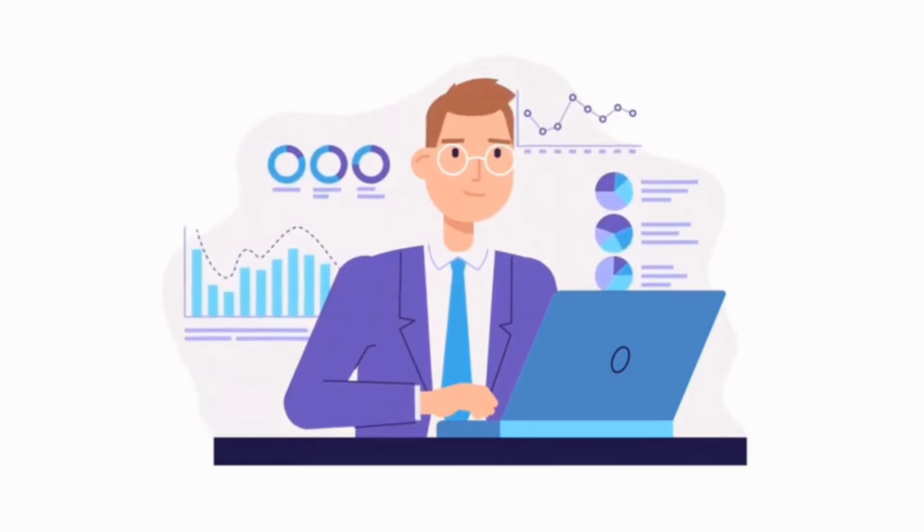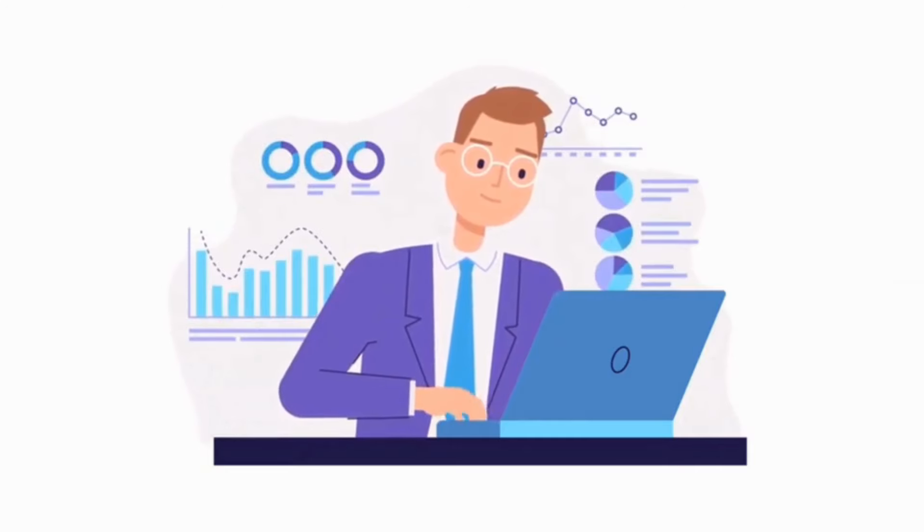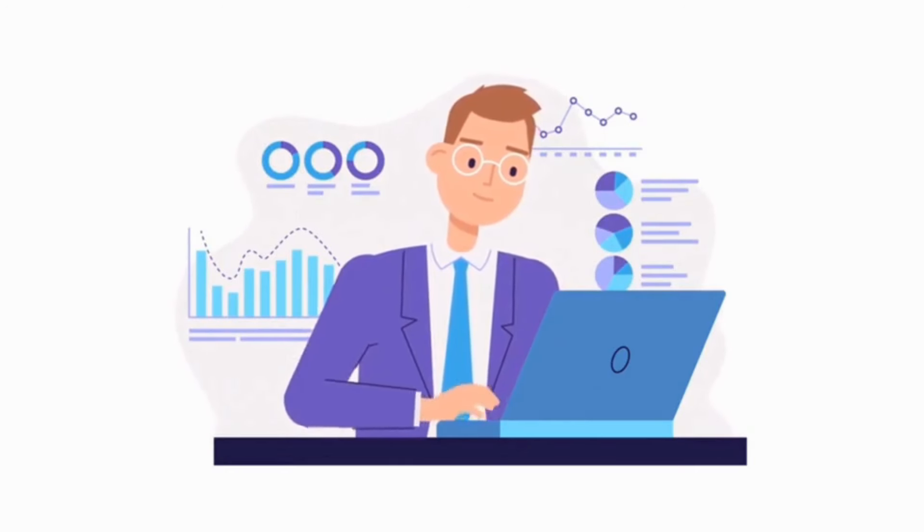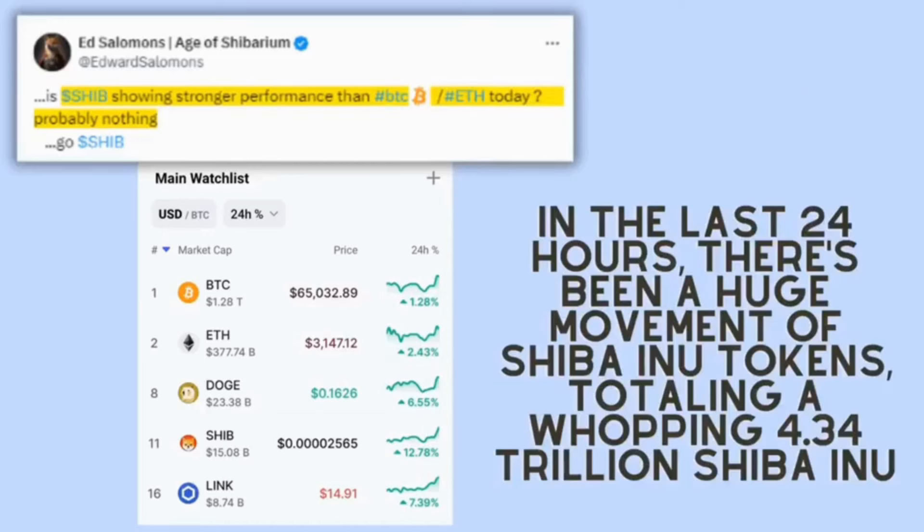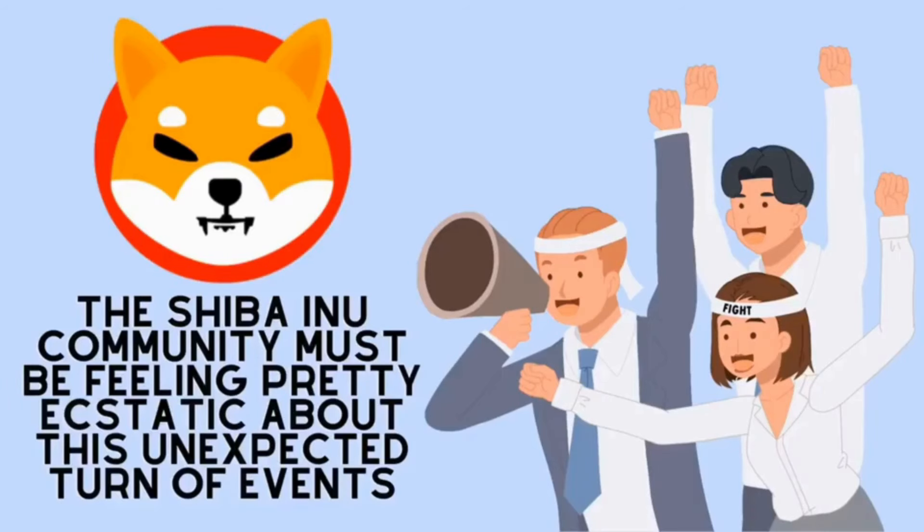It's like if you went to a party expecting your friend to be the center of attention, but then someone else steals the show with an unexpected dance move. But what's even more astonishing is that Shiba Inu outshone even Bitcoin on a day when Bitcoin's highly anticipated halving event occurred, that many people had been eagerly awaiting for four years. This is a really big deal. The Shiba Inu community must be feeling pretty ecstatic about this unexpected turn of events.